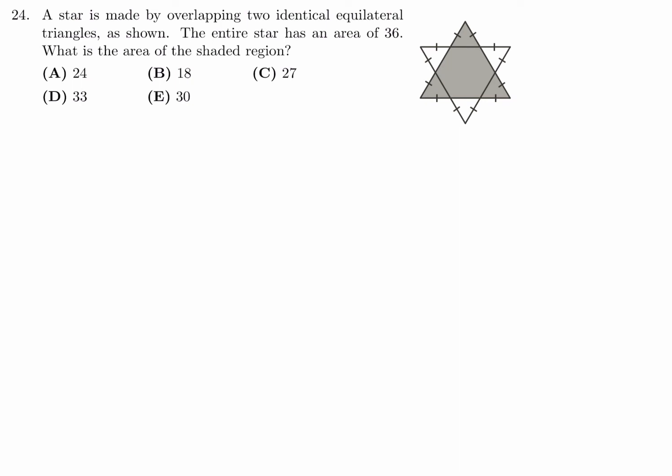A star is made by overlapping two identical equilateral triangles as shown. The entire star has an area of 36. What is the area of the shaded region? As always on math contests, if you can find a shortcut, a quick way of doing something, then by all means do so.